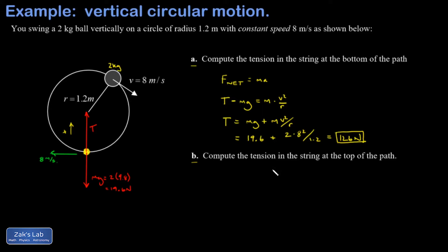Okay part b, get the tension in the string at the top of the path. So let's draw our ball up here. Two kilograms is the mass and I've got gravity of course pulling straight down with a magnitude of 19.6 newtons and I also have the tension pulling straight down.